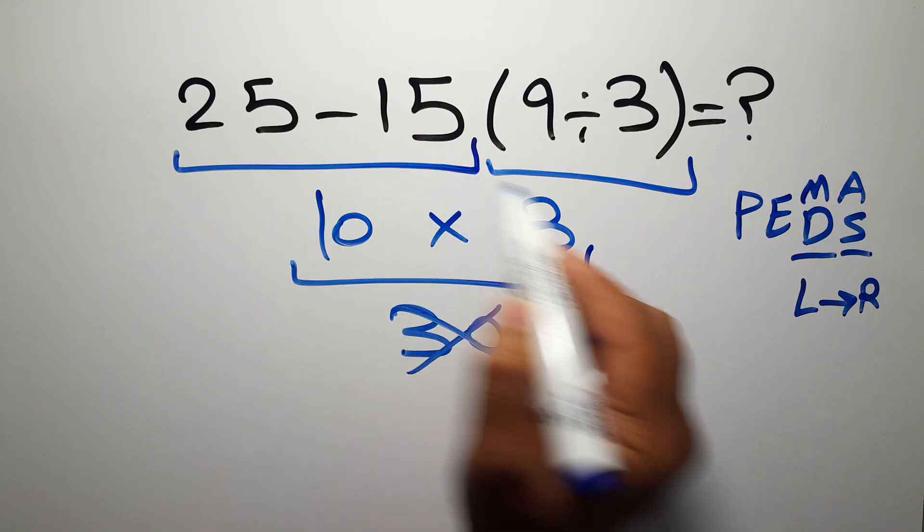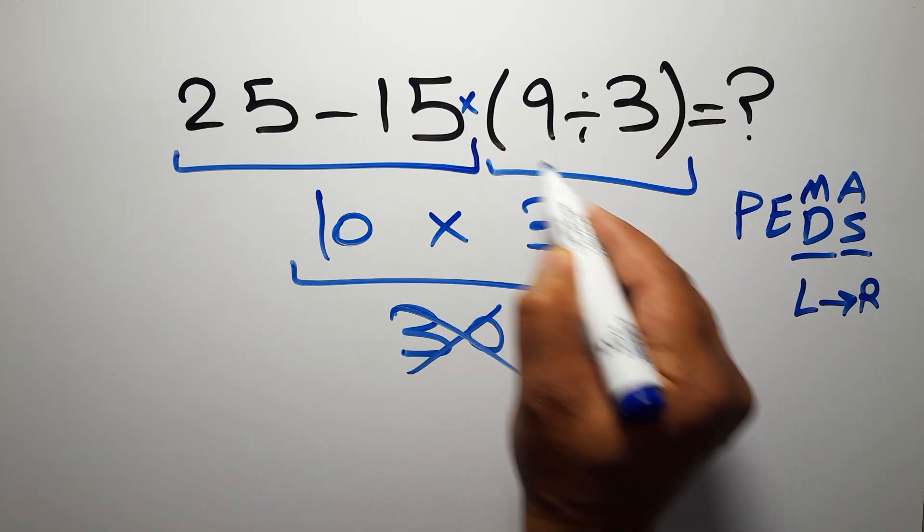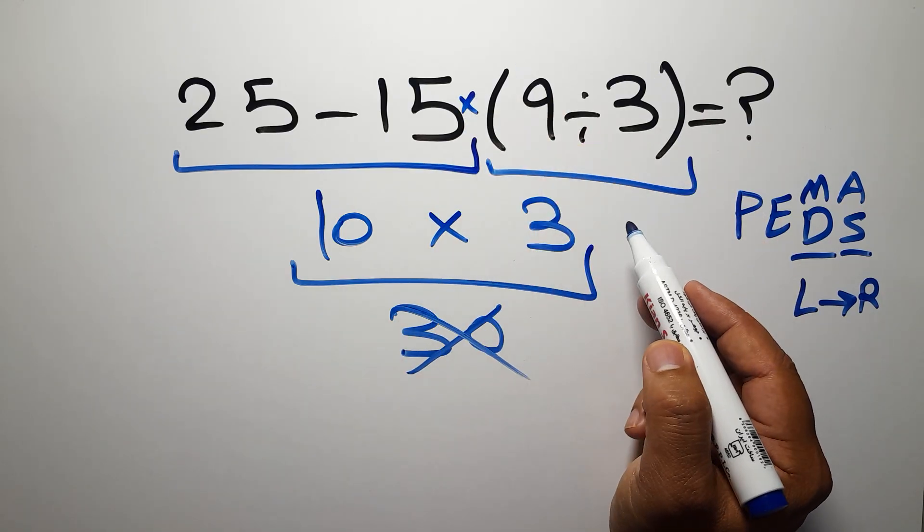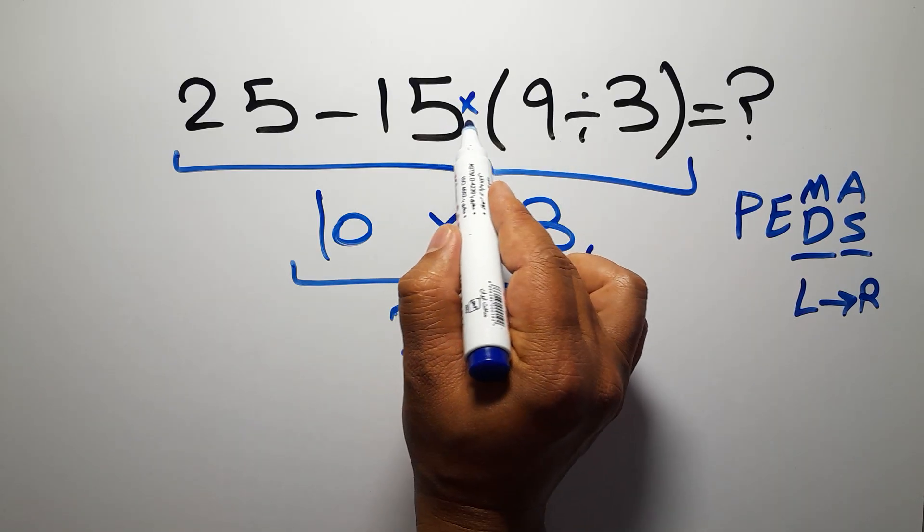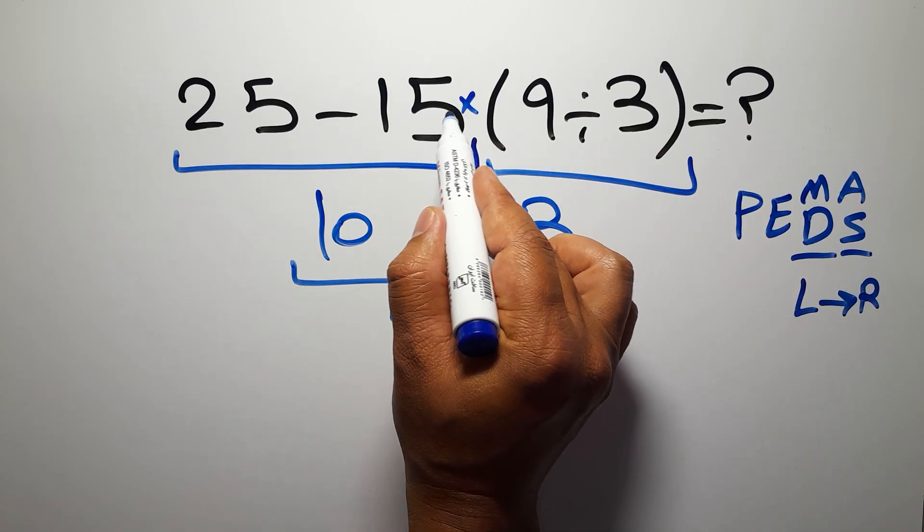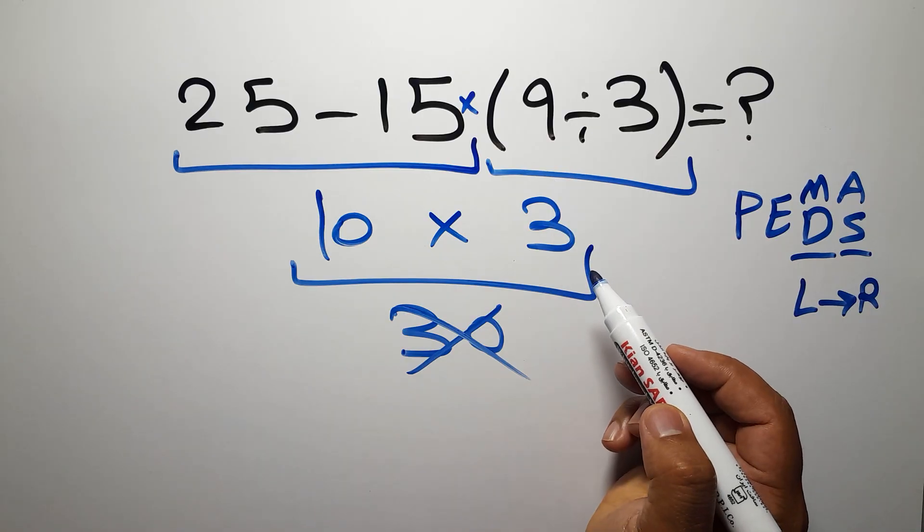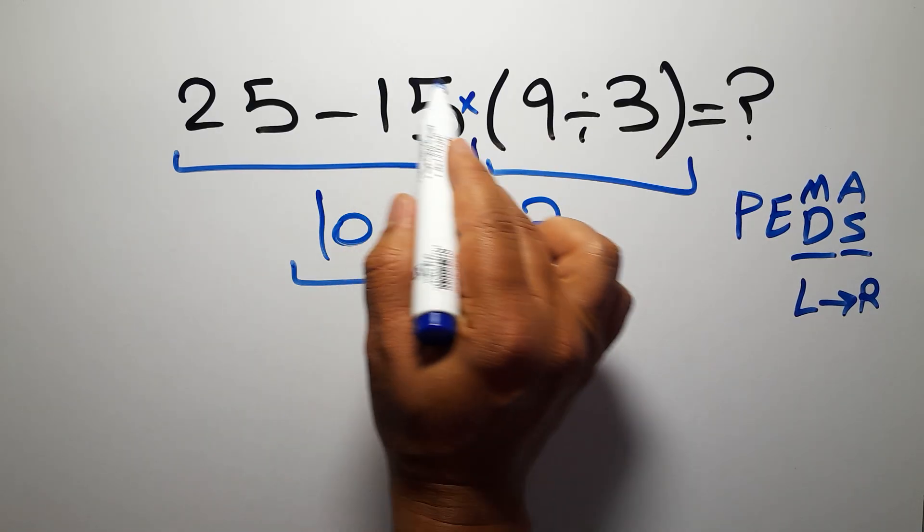In this expression we have one subtraction, one multiplication, and this parentheses. Inside these parentheses we have one division. We need to pay attention that here we have a multiplication because in mathematics, when a number is placed next to parentheses, it means multiplication.